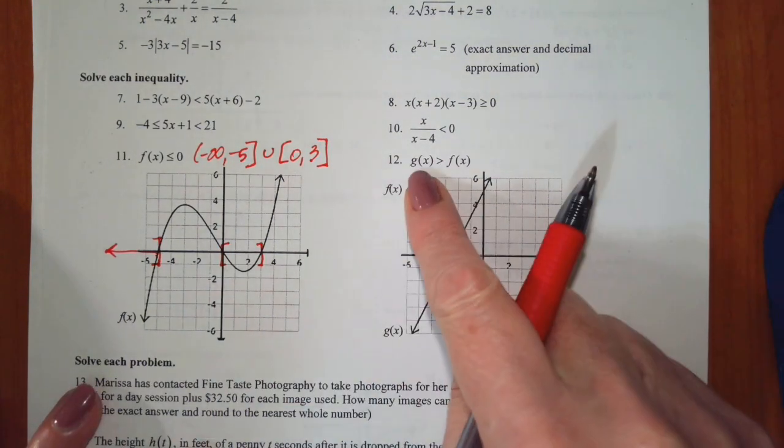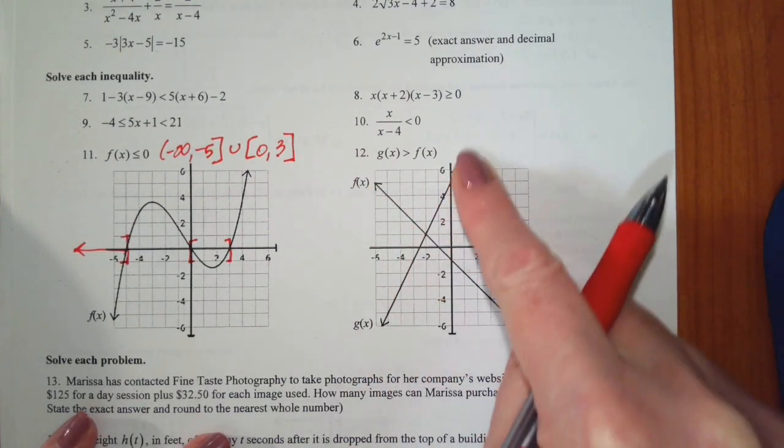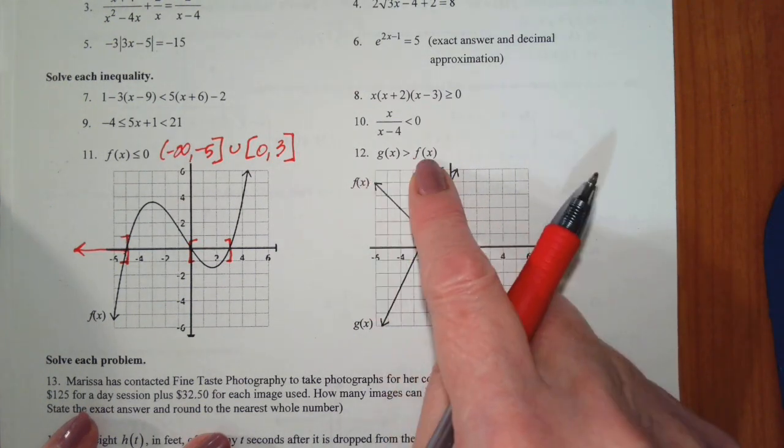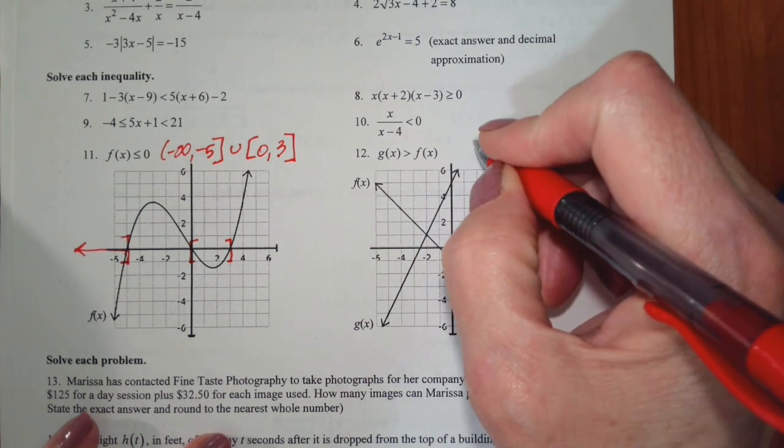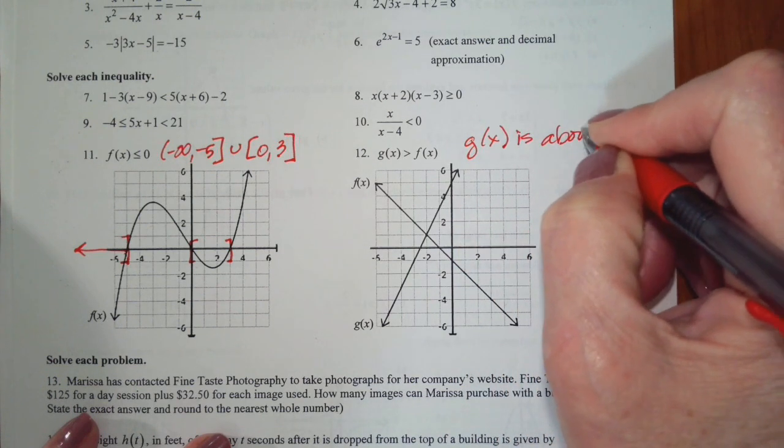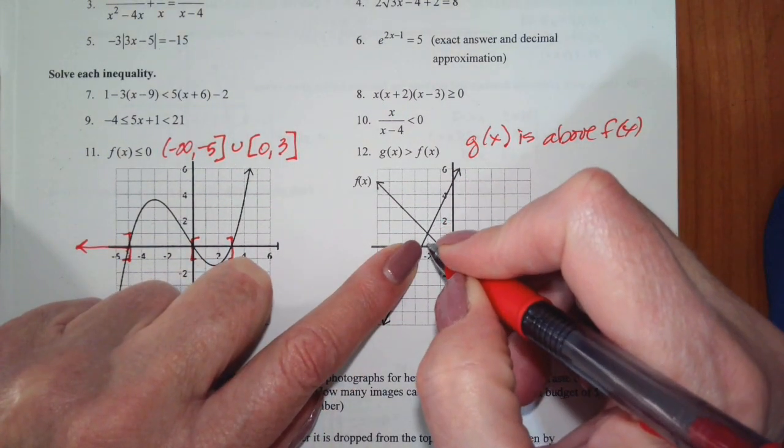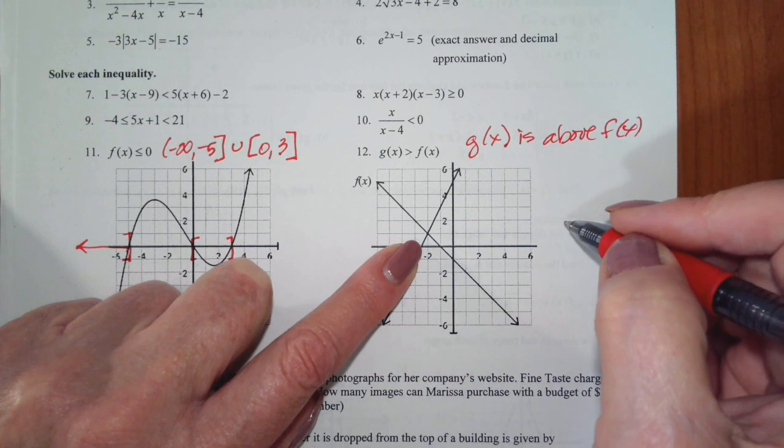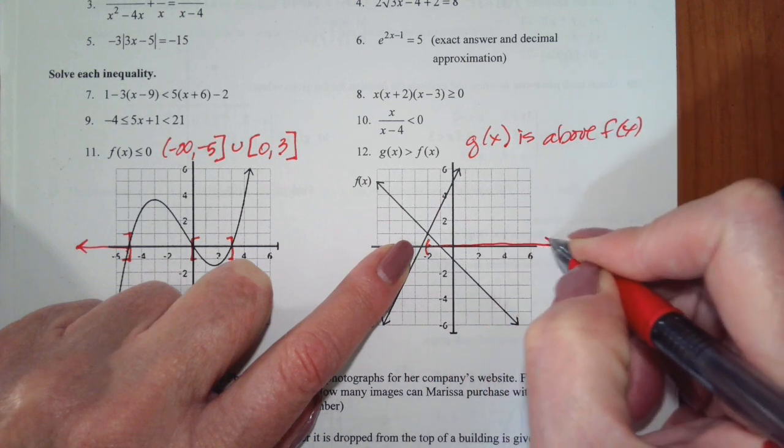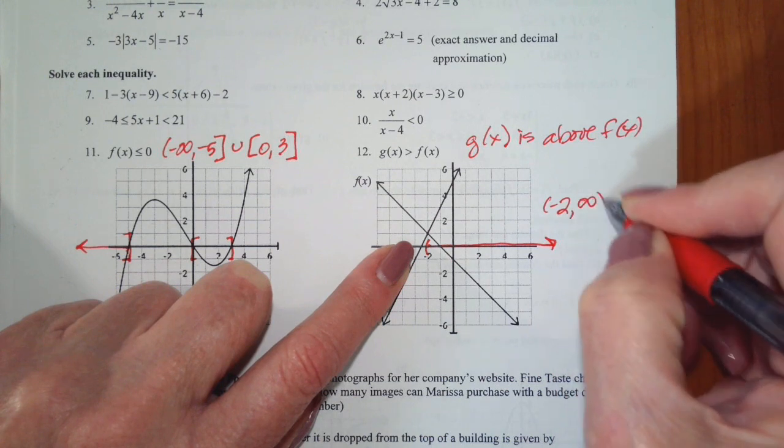This would be negative infinity to negative 5, including the endpoint, and 0 to 3. Alright, so I want to know where two functions in relation to each other, this is g of x and this is f of x. And I want to know where g of x is greater than f of x. That means where the g of x is above f of x. That starts right here. You're looking for the x values where this occurs. So it starts from negative 2 and goes to infinity.